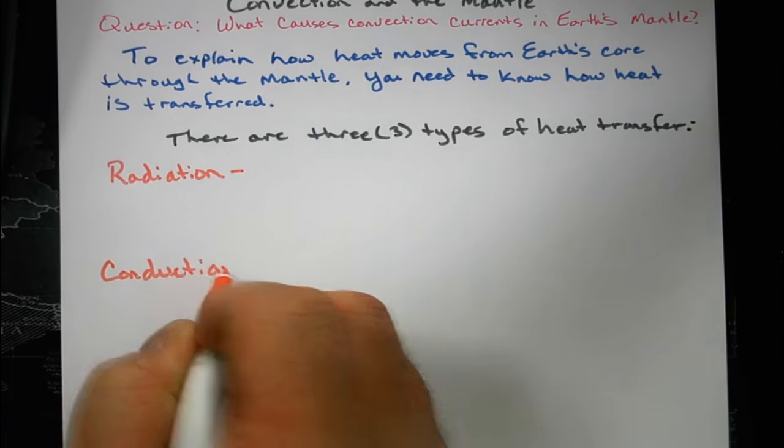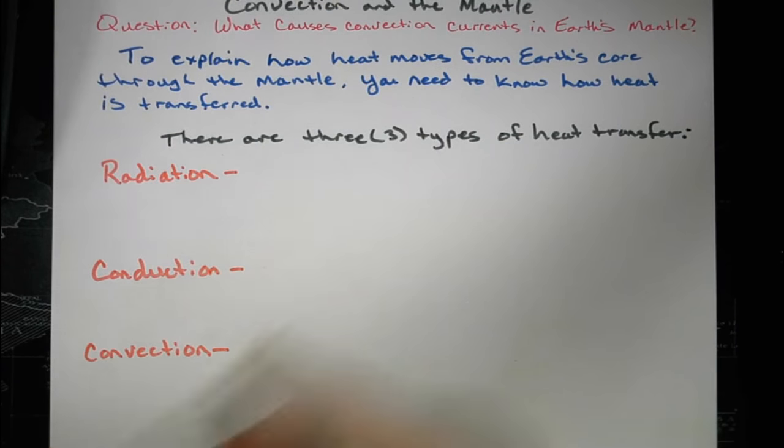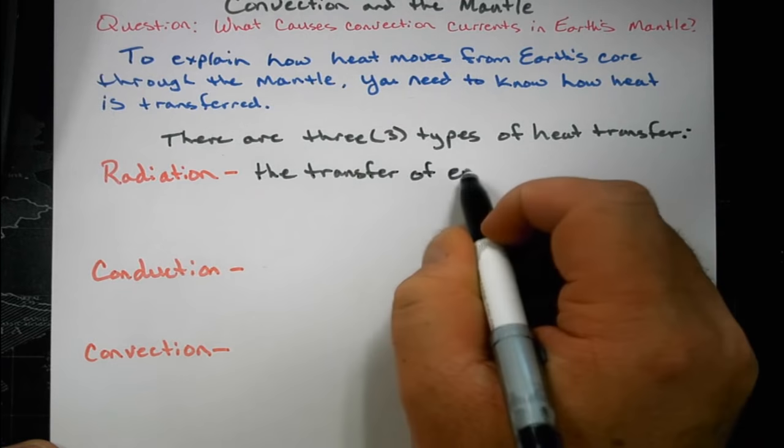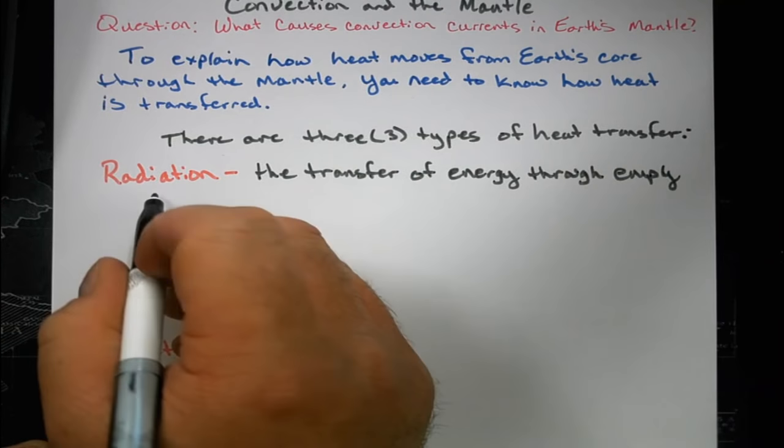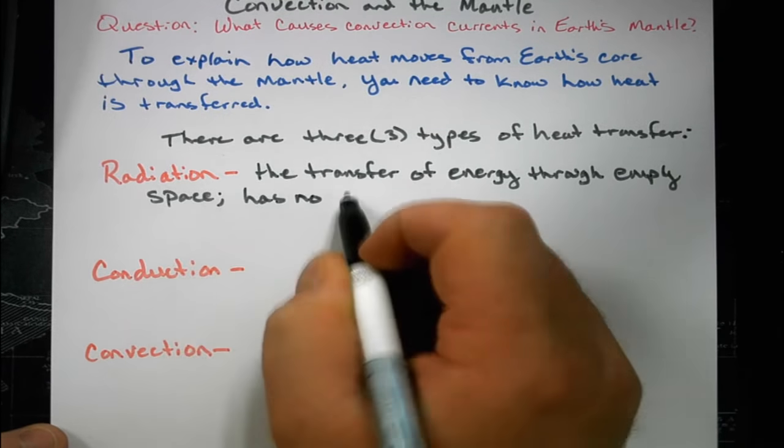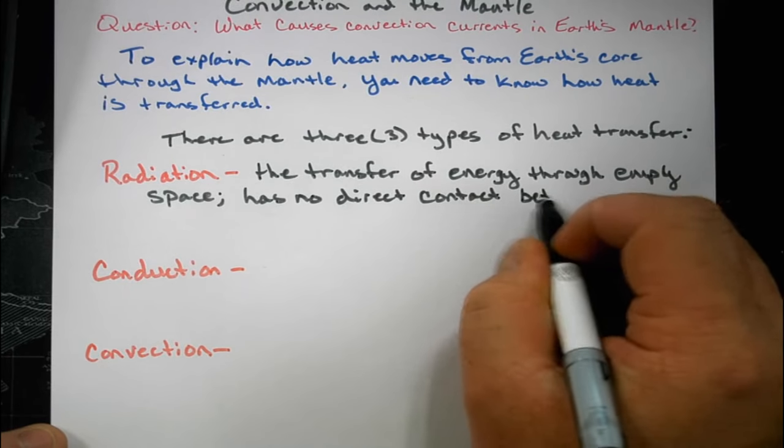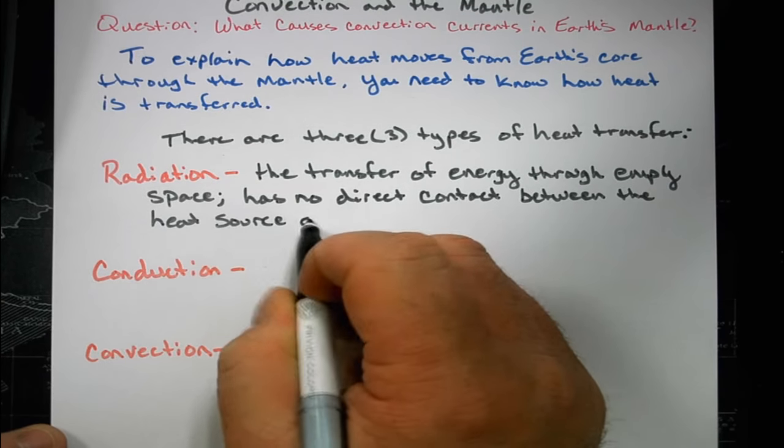They are radiation, conduction, and convection. Radiation is the transfer of energy through empty space. It has no direct contact between the heat source and an object. For example, sunlight warming Earth's surface.